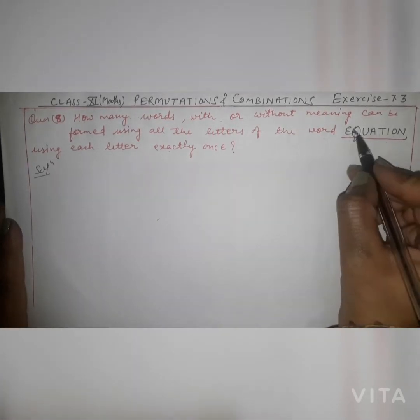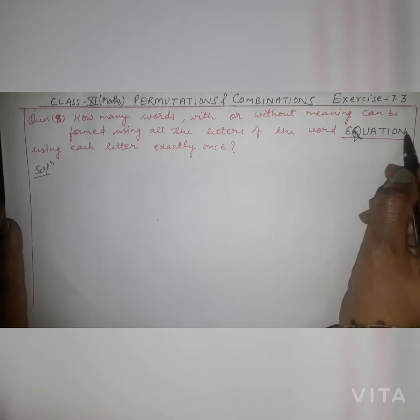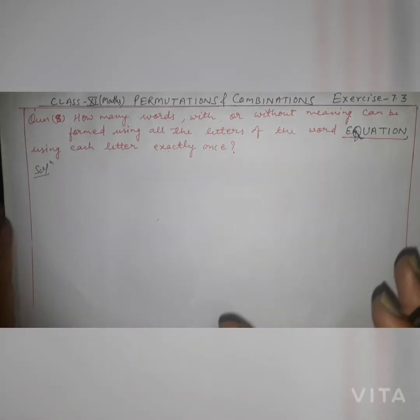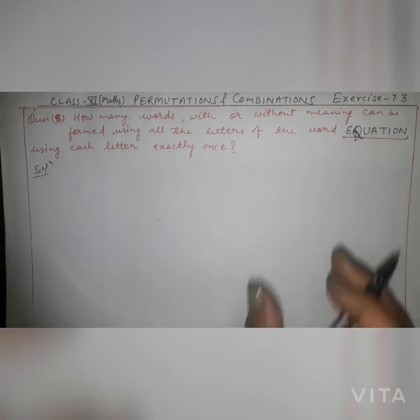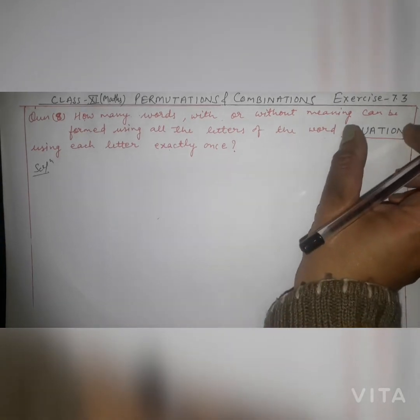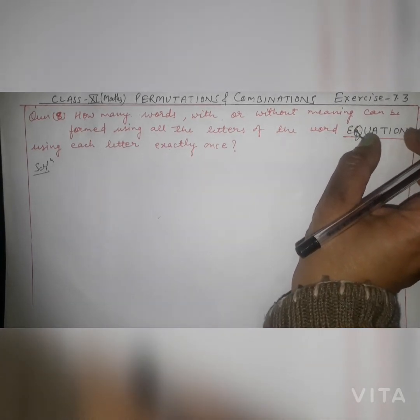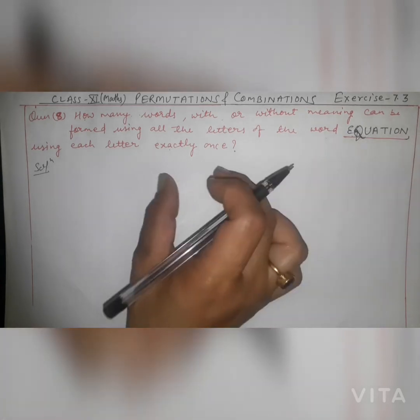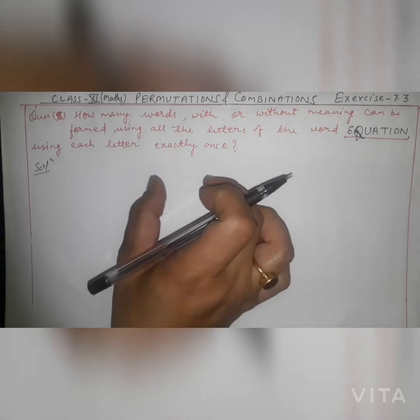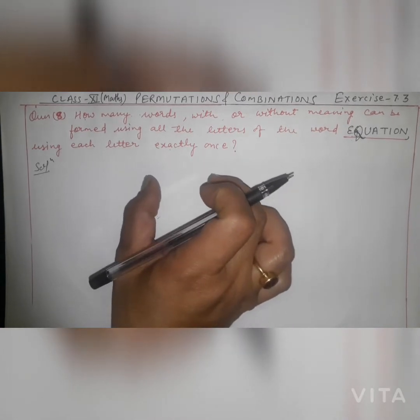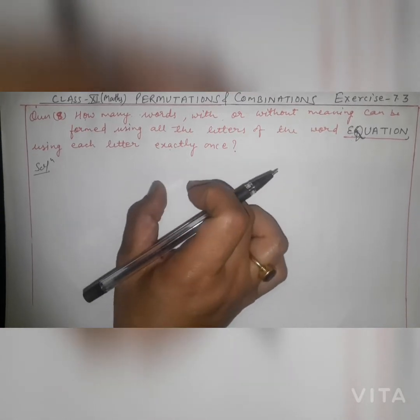How many words means how many letter arrangements you can make. In the word EQUATION there are 8 letters — you can count: 1, 2, 3, 4, 5, 6, 7, 8. So we have 8 letters. We need to find all meaningful and meaningless words that can be formed with these 8 letters, using all 8 letters.